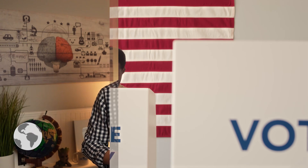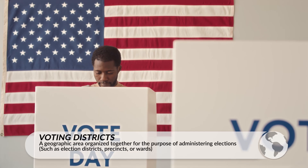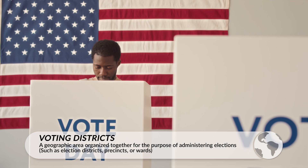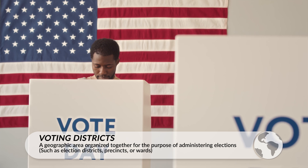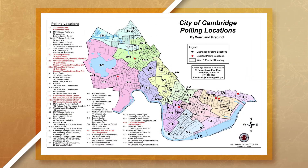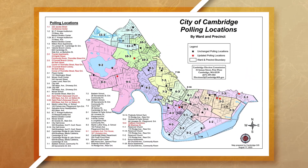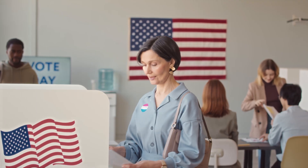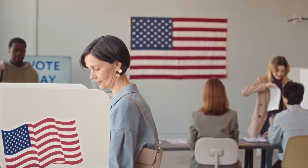Now that we understand what an internal boundary is, it's time to talk about voting districts, which is a generic term adopted by the Bureau of Census to include a wide variety of small polling areas, such as election districts, precincts, or wards, that state and local governments create for the purpose of administrating elections. Essentially, a voting district is a geographic area where citizens go to vote.